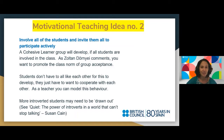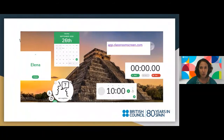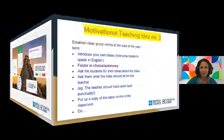Motivational teaching idea number two: involve all students and invite them to participate actively — this helps develop a cohesive learner group. We do have quieter students, and it's our role as teachers to draw them out and ensure all voices are heard. Tools like Wheel of Names or app.classroomscreen.com — which includes a random name generator and many other features — are very useful both online and in face-to-face classrooms.